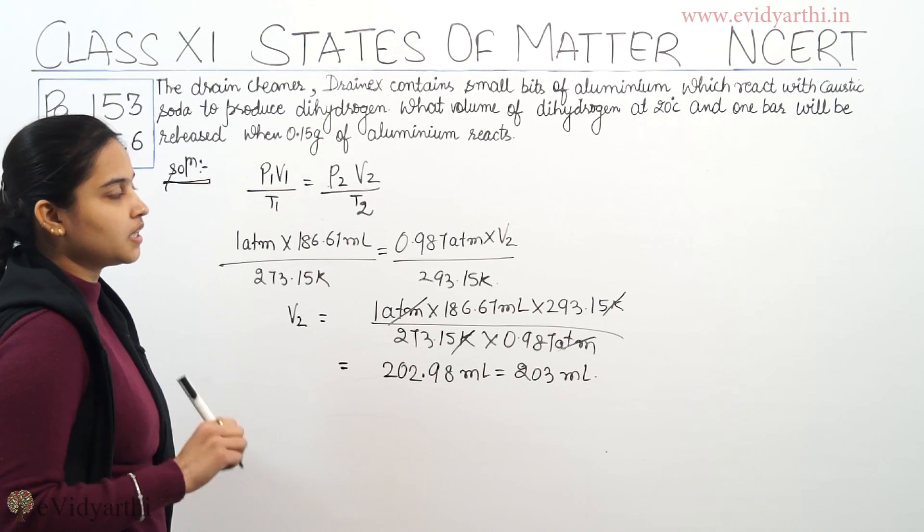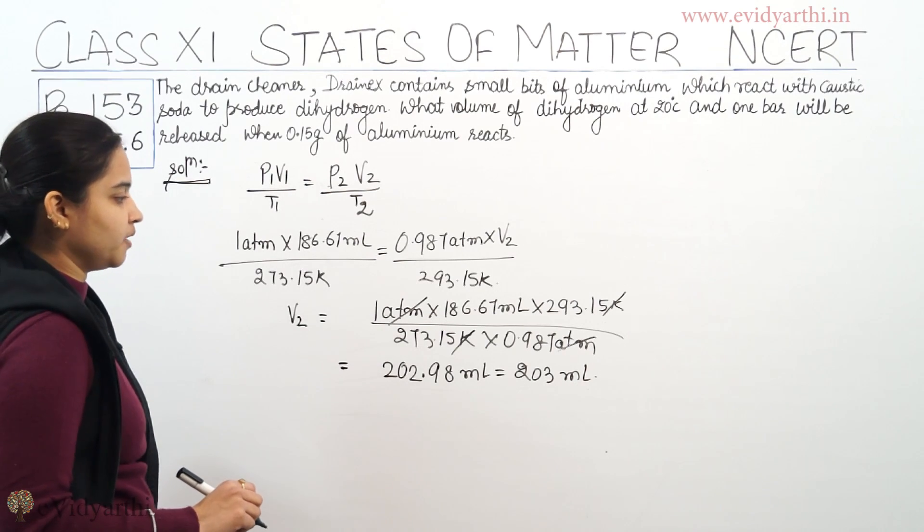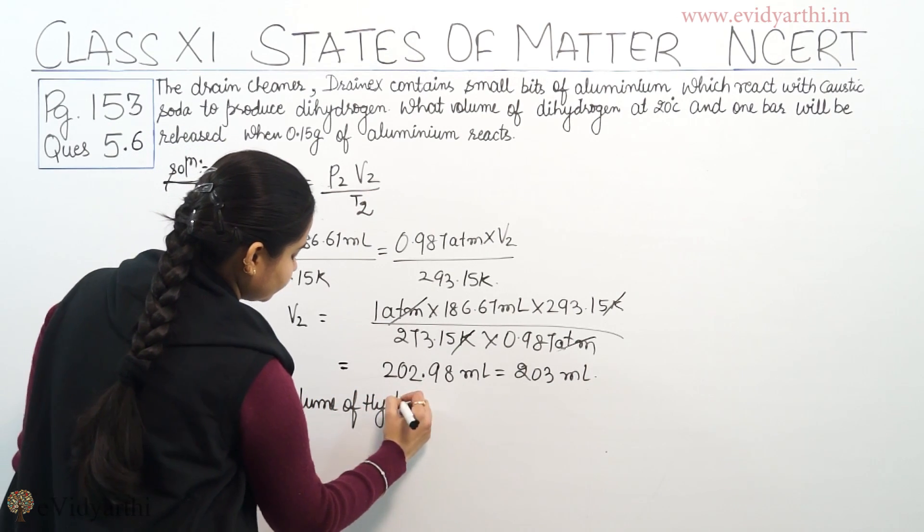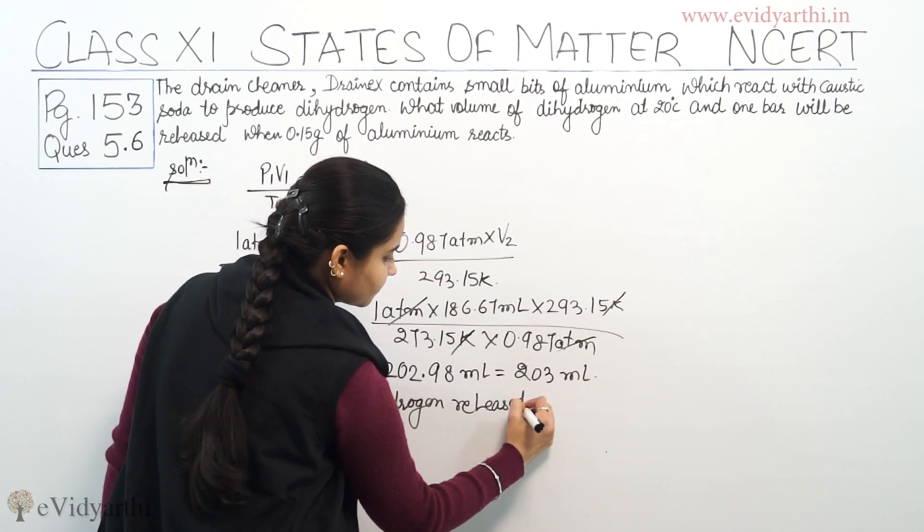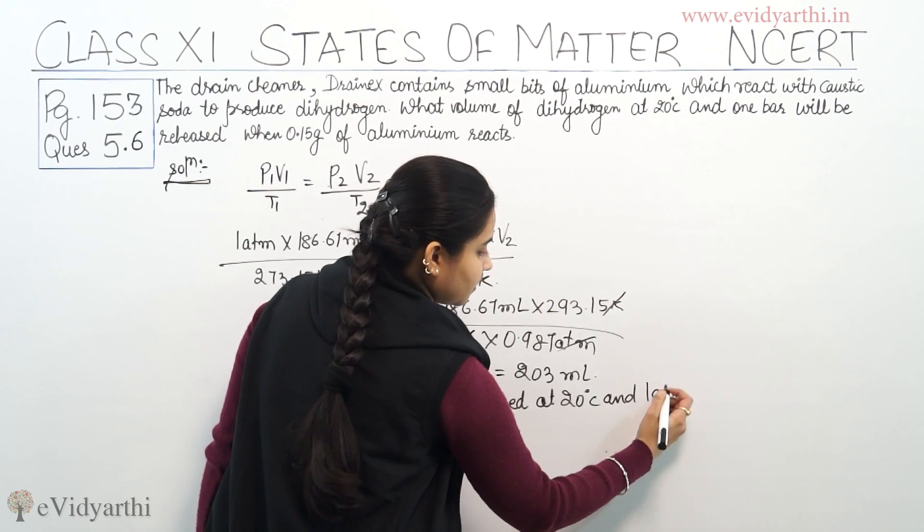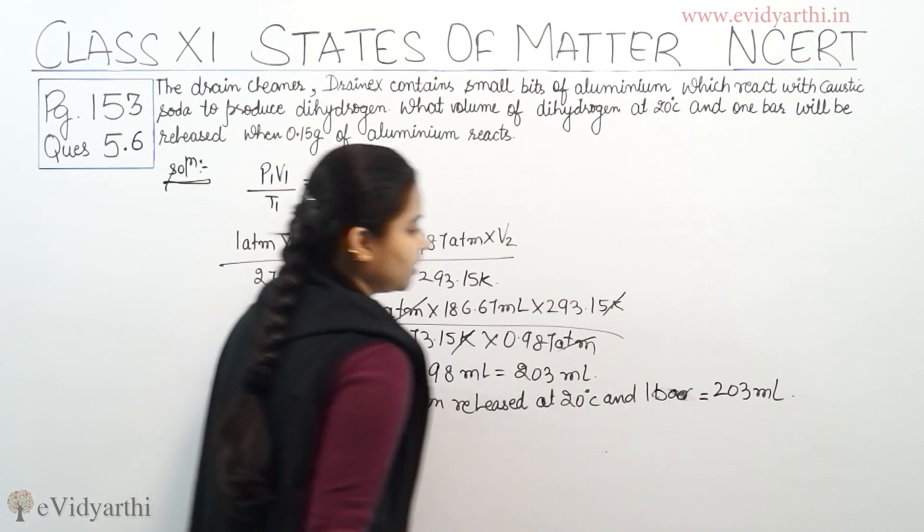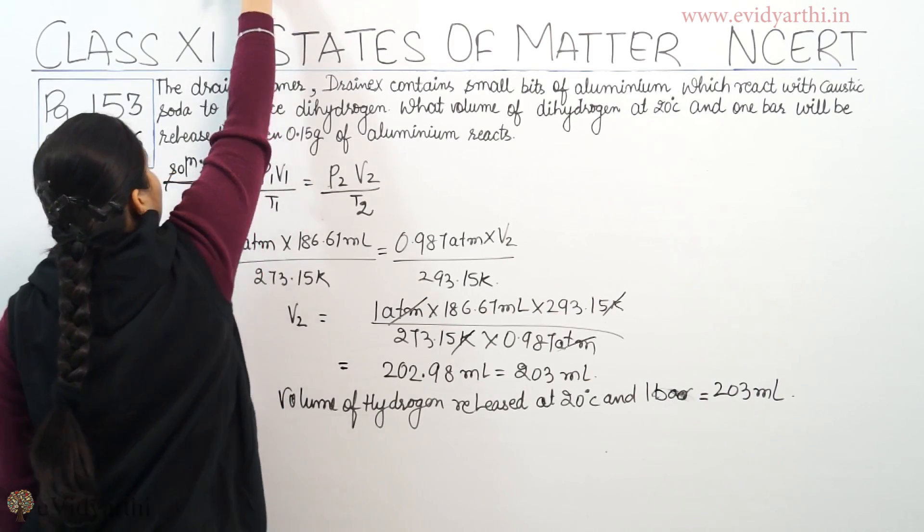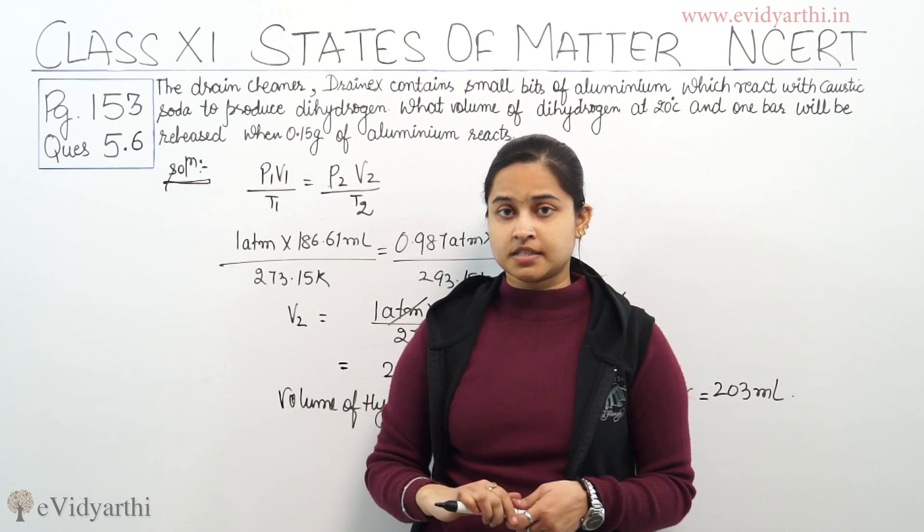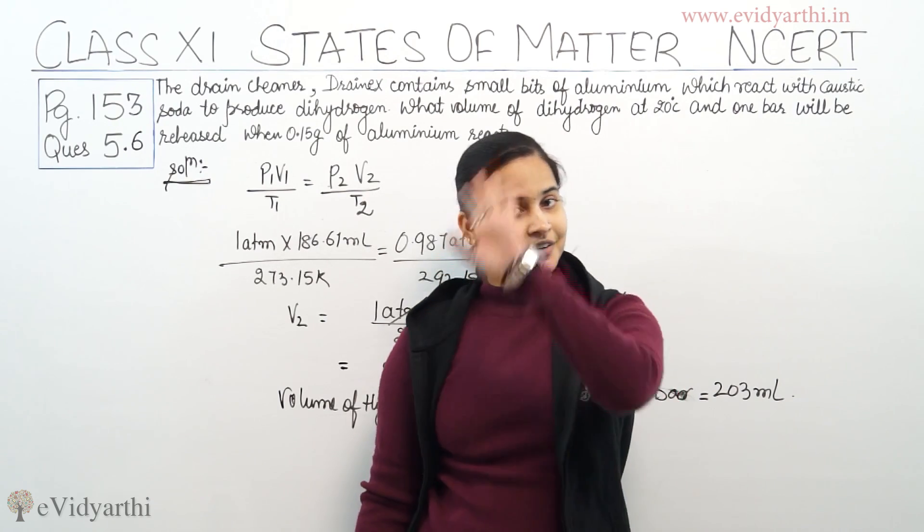So we can say volume of dihydrogen at 20 degrees celsius and 1 bar that will be released equals 203 ml when 0.15 gram of aluminium reacts. So I hope there won't be any doubt now regarding the solution of this question, regarding this numerical. Each and every part I have explained very clearly, but still if anyone has any doubt regarding this solution or this derivation, please write it out in the comment section below. It's me Rakhi saying you all goodbye and take care.